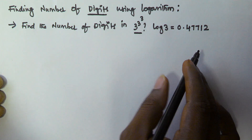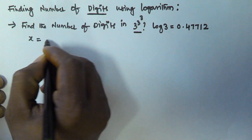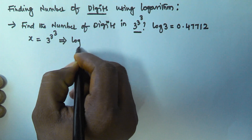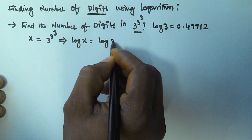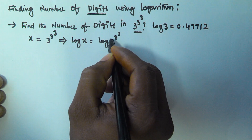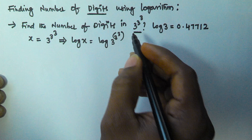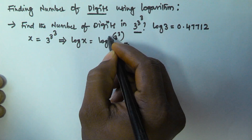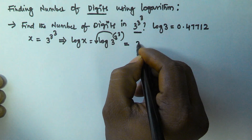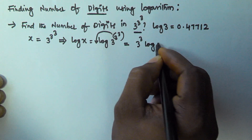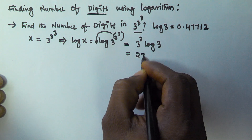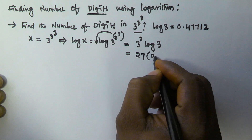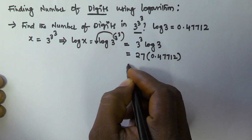Let's take this value as x. So x is equal to 3 to the power of 3 to the power of 3. Now apply log on both sides — that is, log x is equal to log of 3 to the power of 3 to the power of 3. Using the formula log x to the power of m, m will move to the front, so this can be written as 3 to the power of 3 into log 3. Since 3 to the power of 3 equals 27, and log 3 is given as 0.47712, substitute that value: 27 into 0.47712.